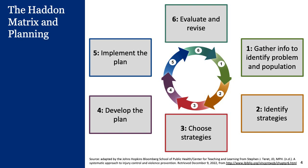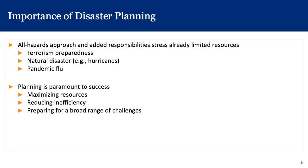From that menu of options, we would want to choose strategies deemed by a team of experts — and by the way, a Haddon Matrix is ideal for group brainstorming with people with different areas of expertise — to identify the optimal ones for achieving the desired public health goal. Proper planning prevents poor performance, and this is very much true of disaster planning as well.